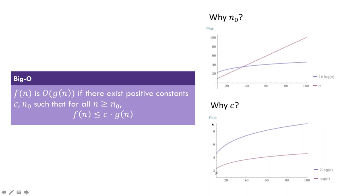Now we'll go over the formal definition of big O. f(n) is O(g(n)) if there exist positive constants c and n₀ such that for all n greater than or equal to n₀, f(n) is less than or equal to c times g(n). This is a bit of a mouthful, but we'll break it down. Our job is to pick constants c and n₀ that make this expression true for all n ≥ n₀.